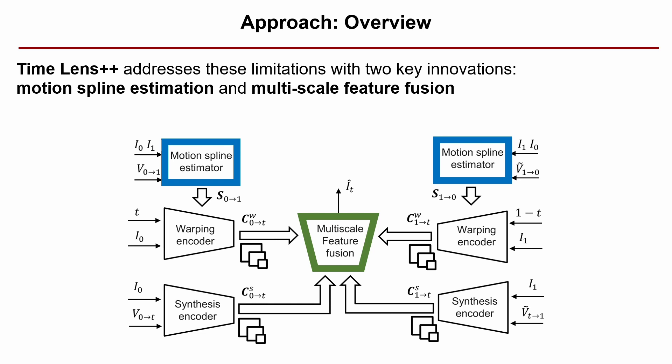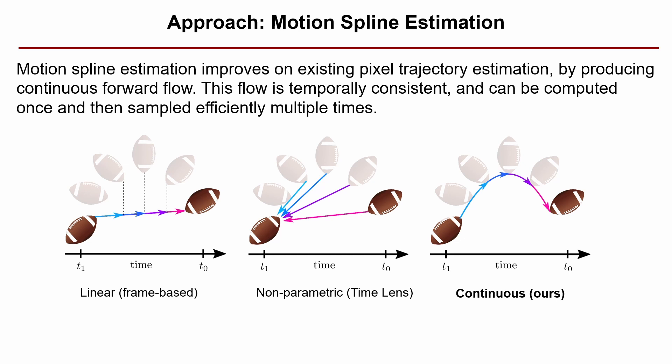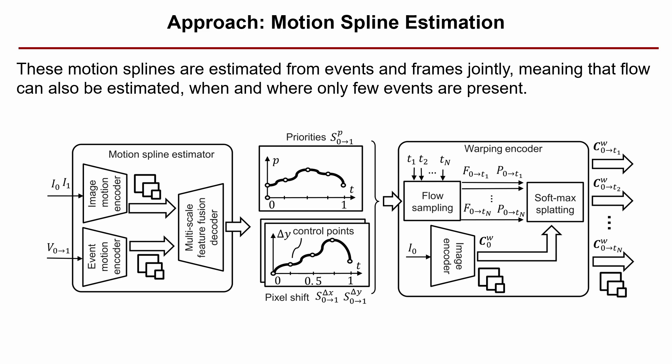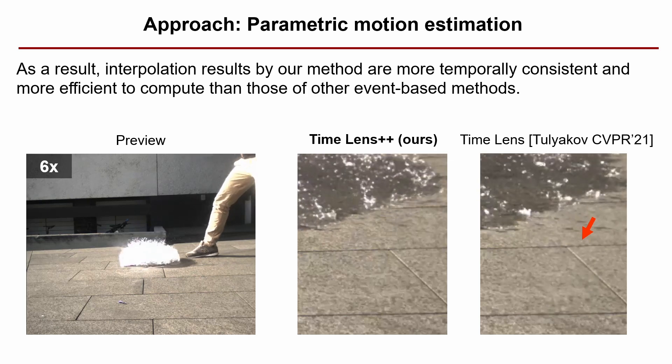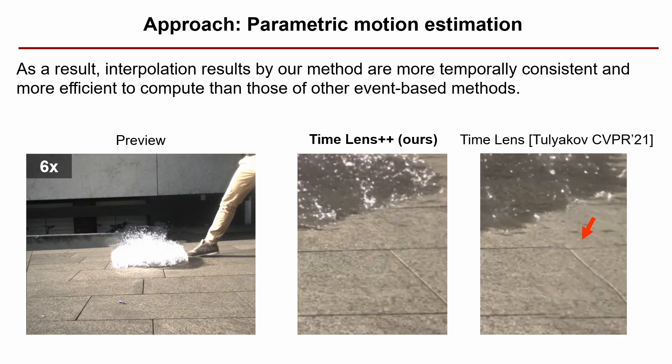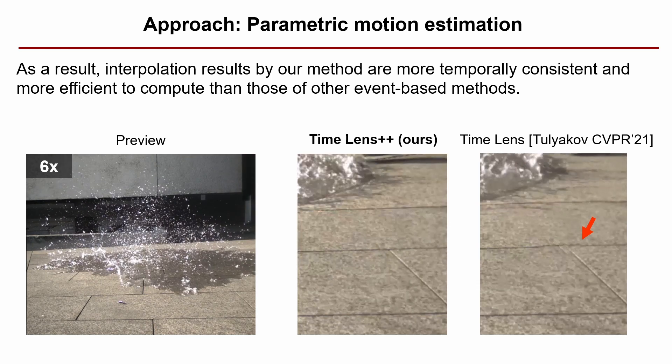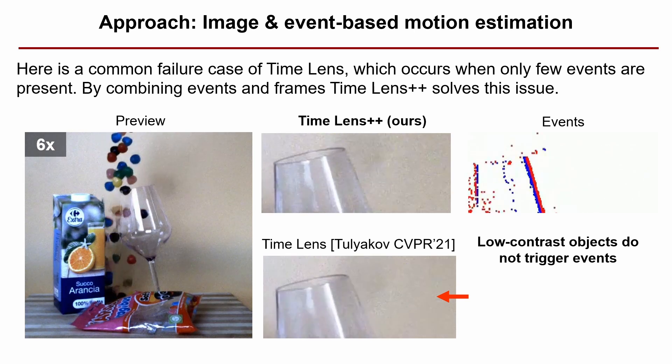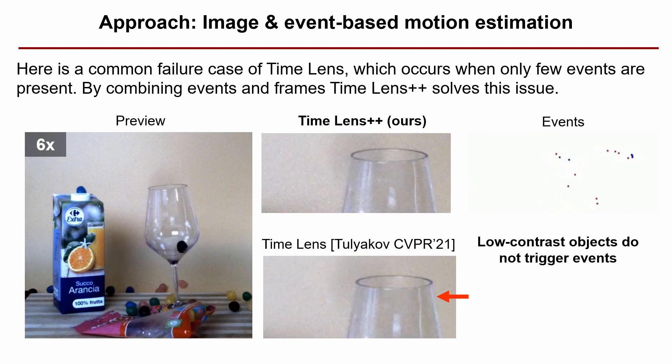Timelence++ addresses these limitations with two key innovations, here marked in blue and green: motion spline estimation and multi-scale feature fusion. Motion spline estimation improves on existing approaches to pixel trajectory estimation by producing continuous forward flow. This flow is inherently temporally consistent and can be computed once and then sampled efficiently multiple times. These motion splines are estimated from events and frames jointly, meaning that flow can also be estimated when and where only few events are present. As a result, interpolation results by our method are more temporally consistent and more efficient to compute than those of other event-based methods, and it works well especially when events are missing, such as in low contrast regions.